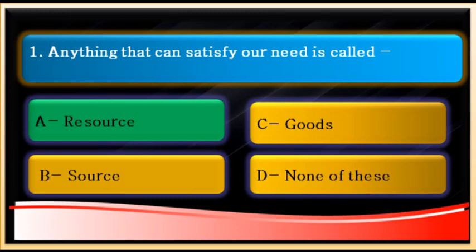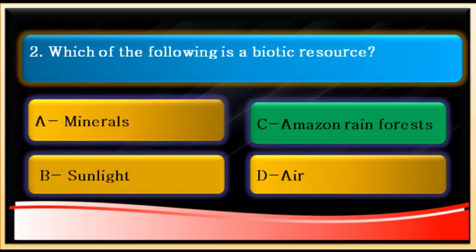Utility and value make anything a resource, and all resources are essential. For useful things, we don't use terms like 'sources' or 'goods,' which is why options B and C are wrong. Now let's move to question number two: which of the following is a biotic resource? Biotic resources are those we get from living beings.